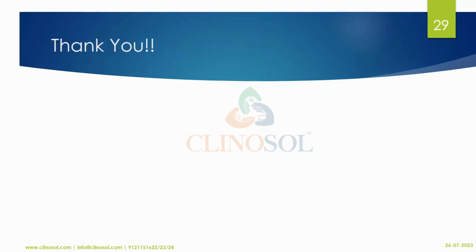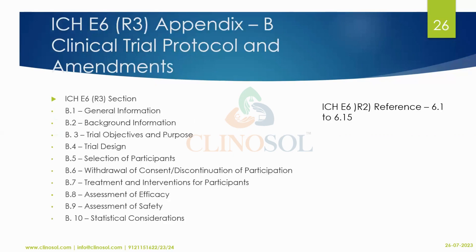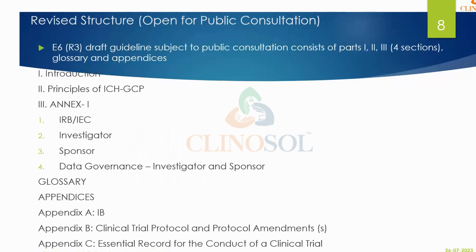In summary, the major changes in ICH E6 R3 compared to R2 include: a new structure with Introduction, Principles, and Annexure 1 (covering IRB/IEC, investigator, sponsor, and the new data governance), updated glossaries, and Appendices A (IB), B (clinical trial protocol), and C (essential documents).